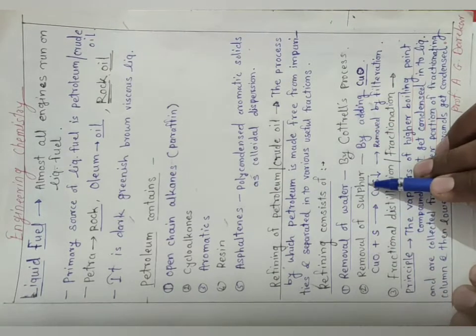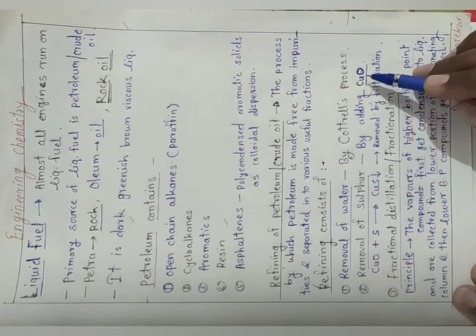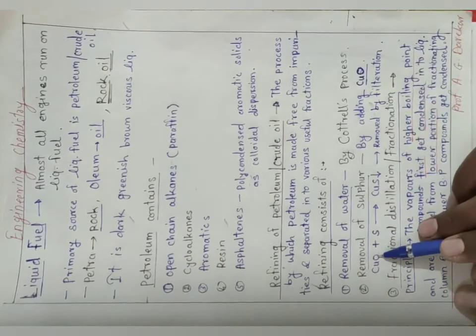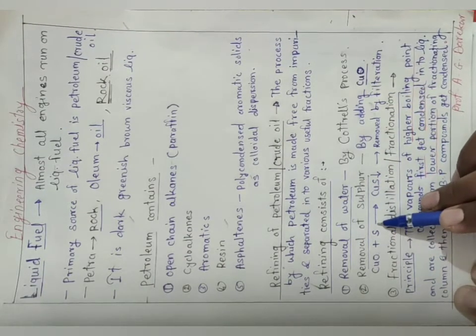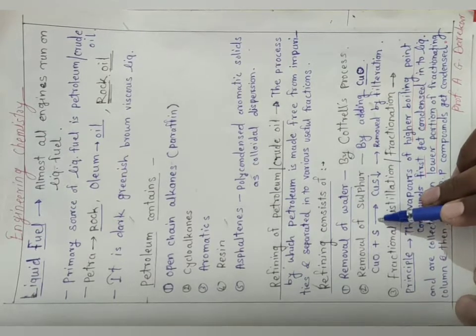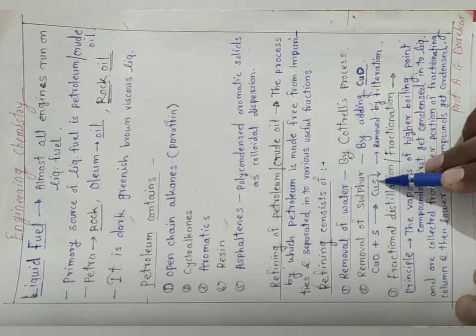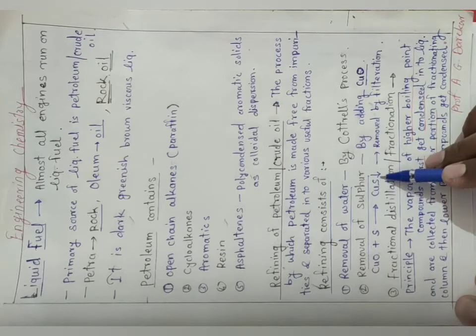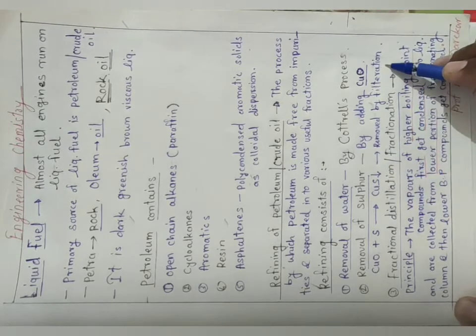Second one, removal of sulfur. Now how to remove sulfur? Simply add copper oxide. Added copper oxide reacts with sulfur present in petroleum. It will produce copper sulfide as a precipitate and we can remove that precipitate by filtration.